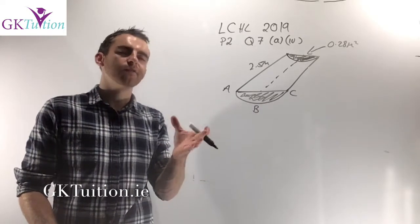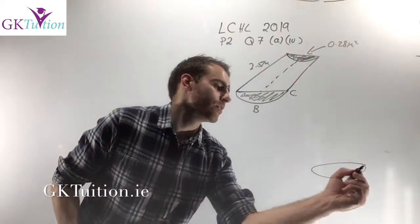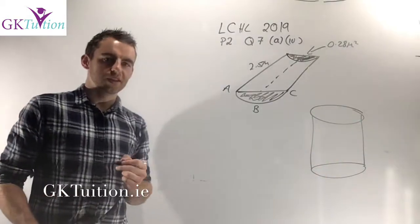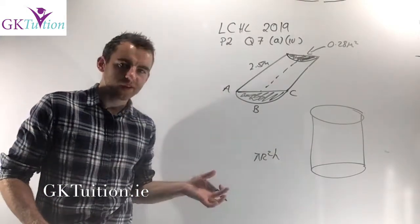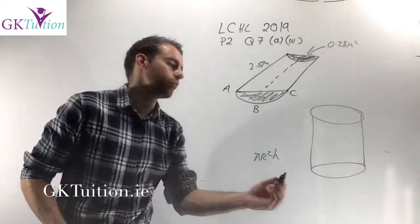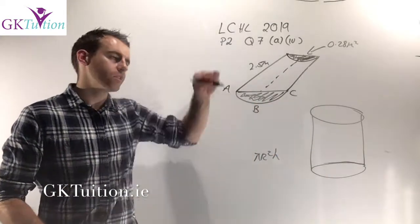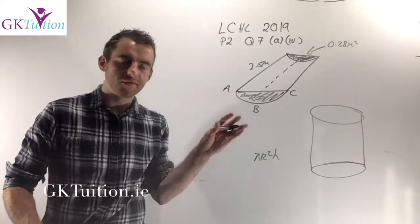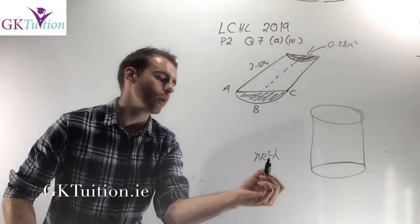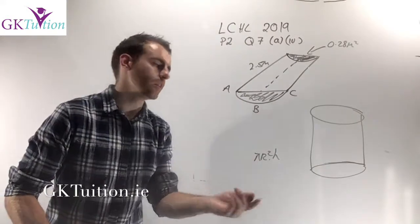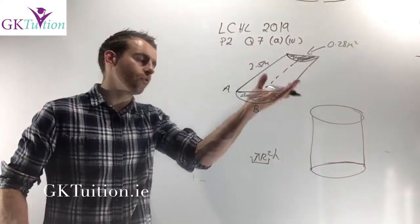You need to figure out how to find the volume of this shape. The rule is that the volume of any 3D shape whose cross-section is uniform is the base area multiplied by the height. For example, the volume of a cylinder is the area of the circular base — pi r squared — multiplied by the height. The same principle applies here.